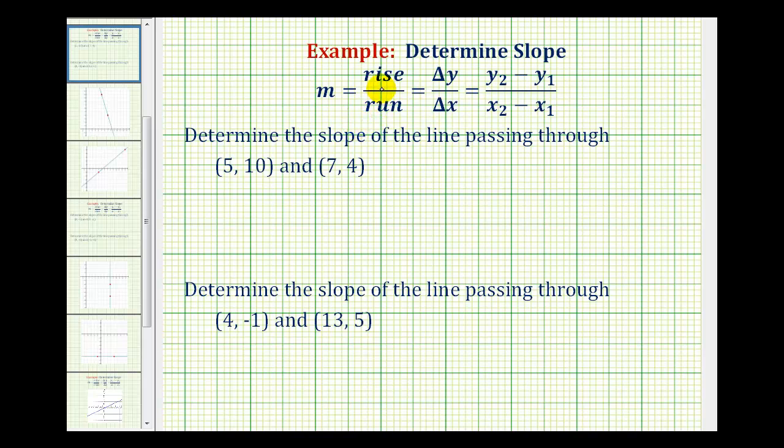The slope of a line is the ratio of the vertical change to the horizontal change, often written as the rise over run, which measures the change in y with respect to the change of x.